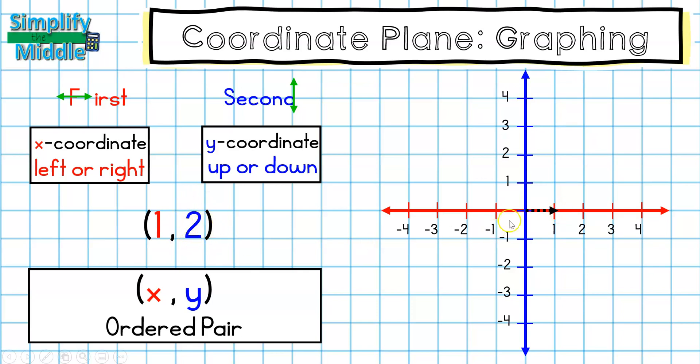The next part of my ordered pair says 2. So that's telling me how far to travel up or down. Since it's a positive 2, I'm going to travel up and then I'll place my point. So 1, 2 is located right here.